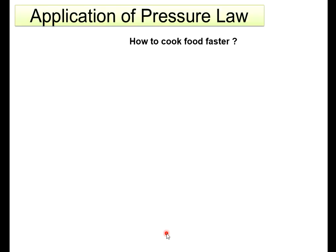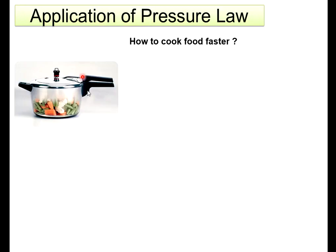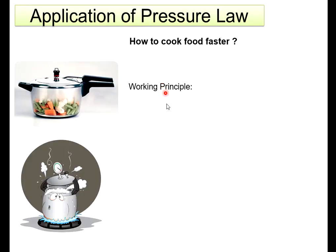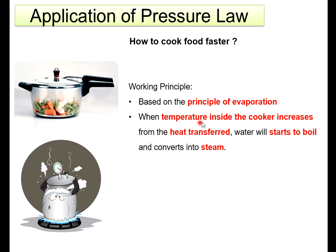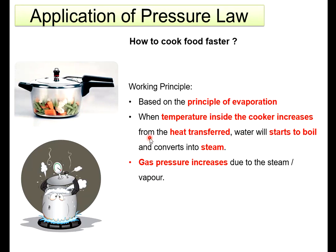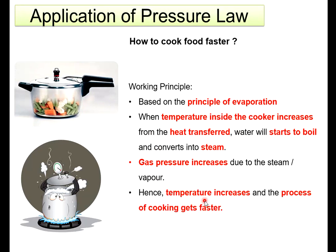Application of pressure law: how to cook food faster - using a pressure cooker. The working principle of a pressure cooker is based on the principle of evaporation. When temperature inside the cooker increases, the volume is fixed. Water will start to boil and convert into steam. Gas pressure increases due to the steam or vapor. Temperature increases, pressure increases - so when the temperature increases, the process of cooking gets faster. This is how the pressure cooker cooks food faster, based on pressure law.